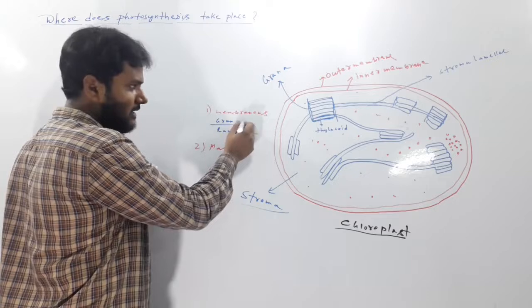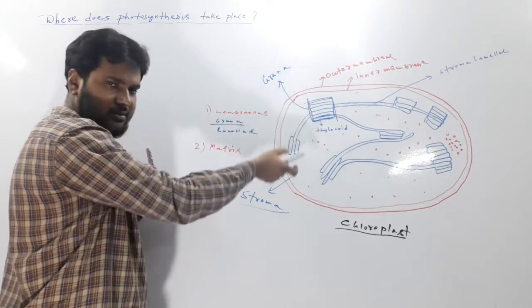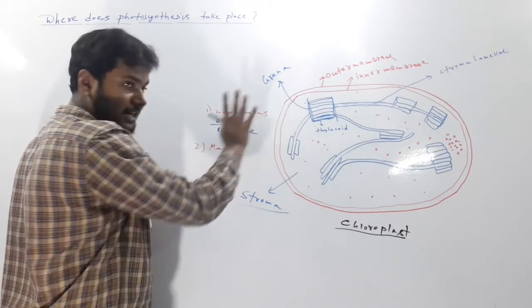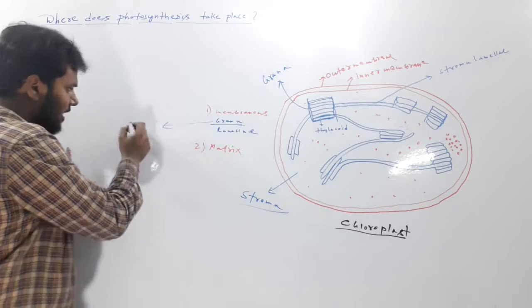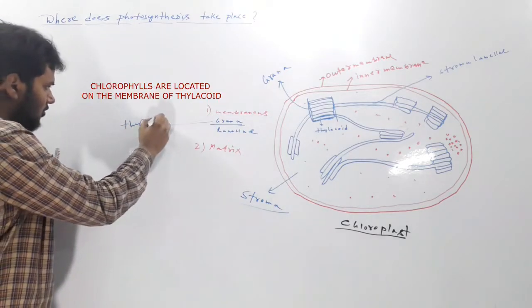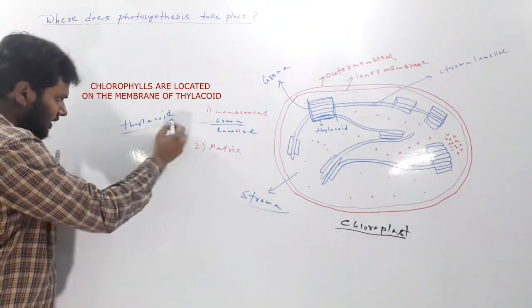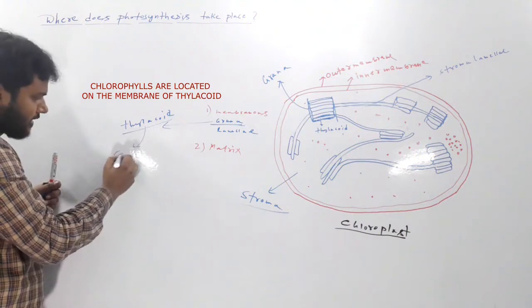What is this grana actually? These granas are made up of thylakoids. And remember, in this thylakoid there is the chlorophyll pigment which is required for trapping of light energy.